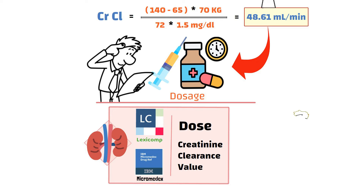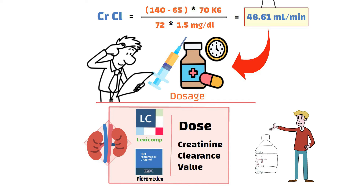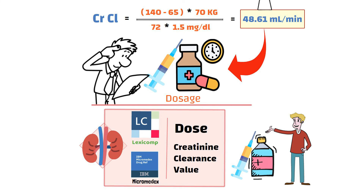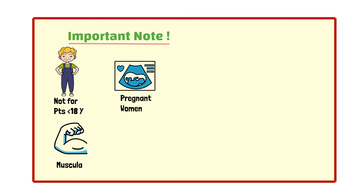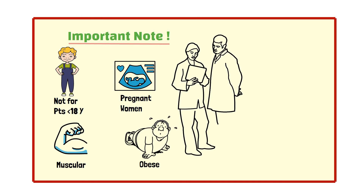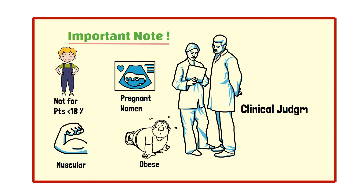The Cockcroft-Gault formula is a useful tool to ensure your patients are receiving the correct dosage. However, it is important to note that this formula is not suitable for patients under 18 years of age, pregnant women, or patients who are very muscular or very obese. In such cases, other formulas or methods may be more appropriate, and healthcare professionals should use clinical judgment and consider other factors in addition to creatinine clearance.